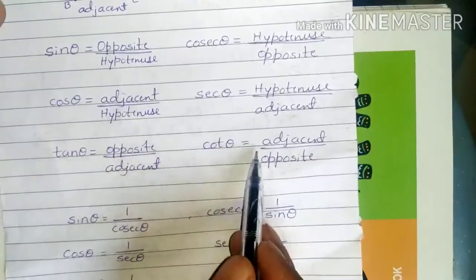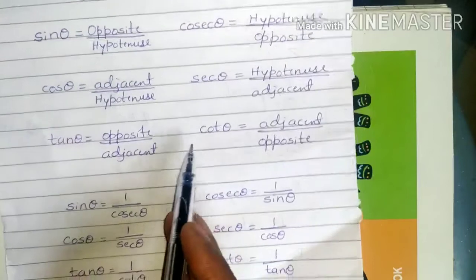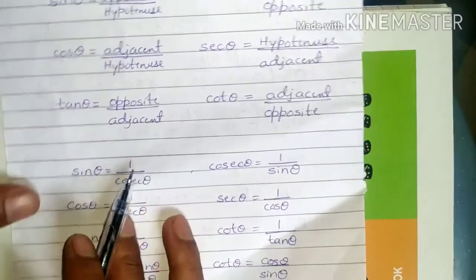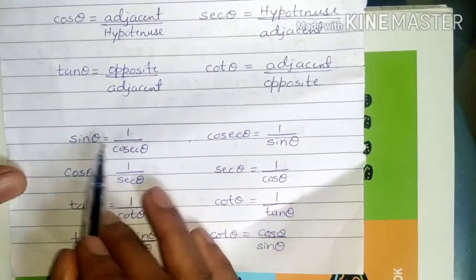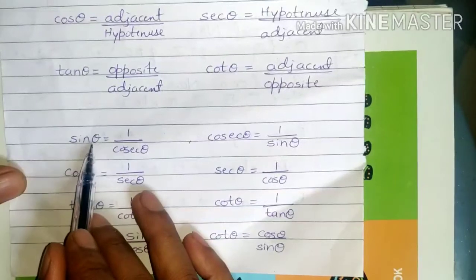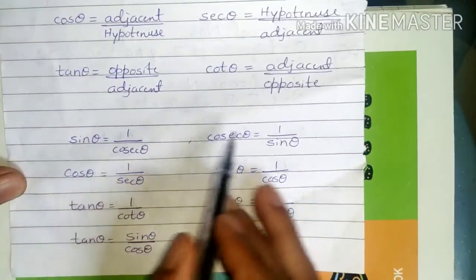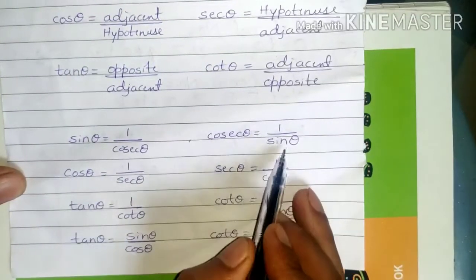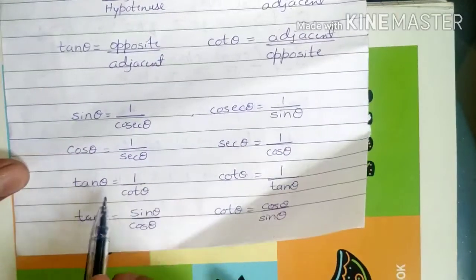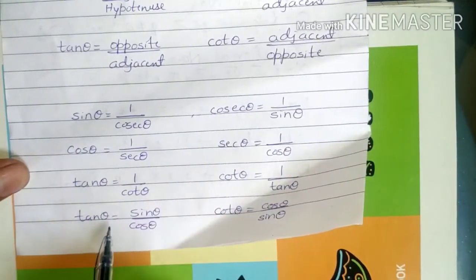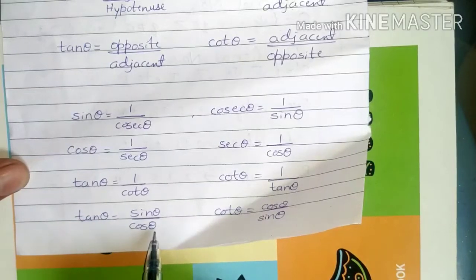Tan theta and cot theta are reciprocals of each other. Also, cosec theta can be written as 1 by sin theta, and sec theta as 1 by cos theta. Tan theta is equal to sin theta by cos theta.